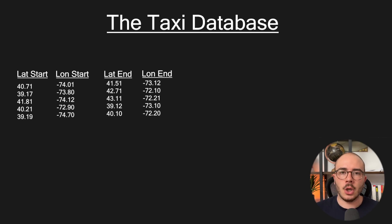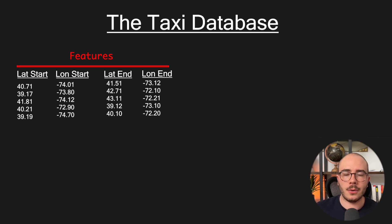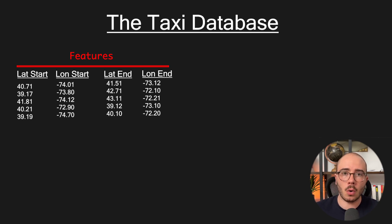Let me give you a very simple example which is well known in features engineering learning. Let's imagine you have some data about New York City taxis. You will have five columns: the latitude and longitude of the start point where the taxi picks up the client, and the latitude and longitude of the end point where the taxi drops off the client. Those are our four first features, and the goal will be to predict the fifth column, which is the price.